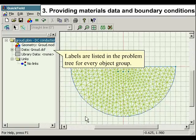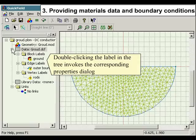Labels are listed in the problem tree for every object group. Double clicking the label in the tree invokes the corresponding properties dialog.